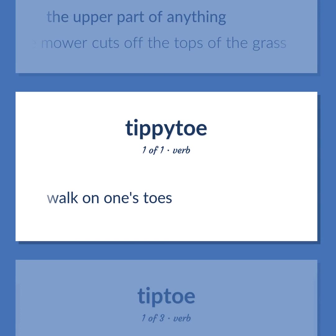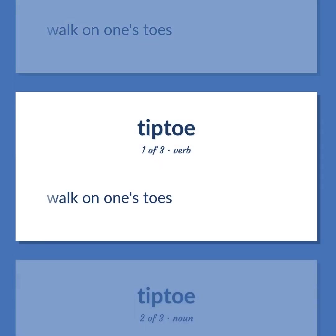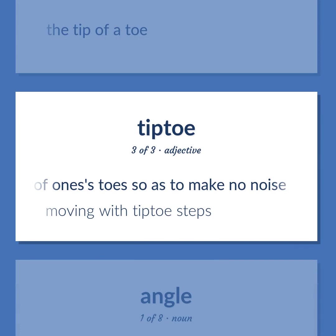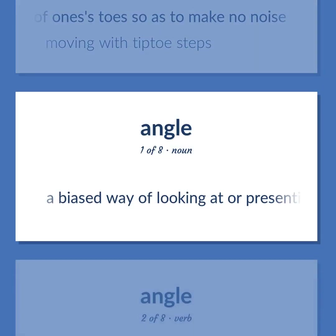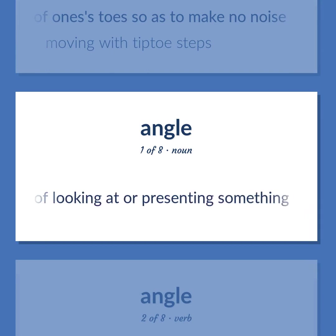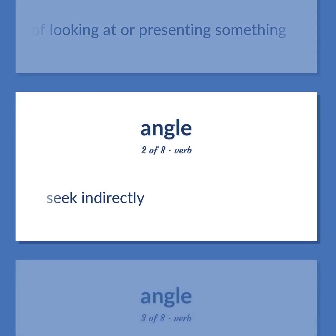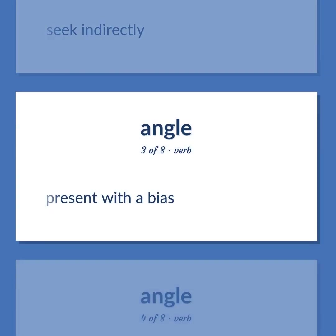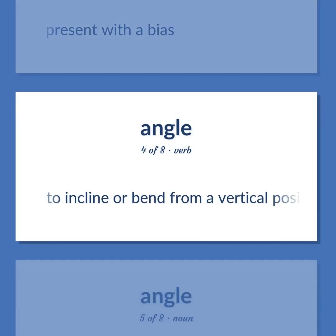TIPTOE: Walk on one's toes. The tip of a toe. Walking on the tips of one's toes so as to make no noise — moving with tiptoe steps. SLANT: A biased way of looking at or presenting something. Seek indirectly. Present with a bias. To incline or bend from a vertical position.